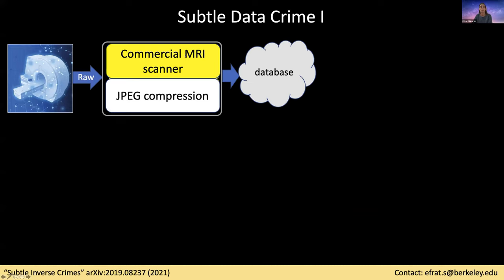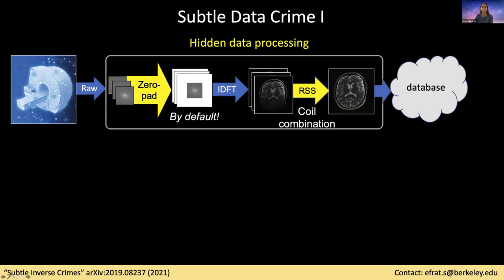Today I will describe two very common pre-processing pipelines. The first is a pipeline implemented inside commercial MRI scanners. A commercial scanner acquires raw k-space data, often using a multi-coil array, and then it applies zero padding — this is done by default inside commercial scanners of all major vendors: Philips, GE, Siemens, and so on. The images are then transformed to the image domain and combined using a method such as root sum of squares into a single magnitude image. This image is not only real-valued, but it is also interpolated due to the zero padding. This image is the output of the scanner, and it is stored in an online database for later purposes.